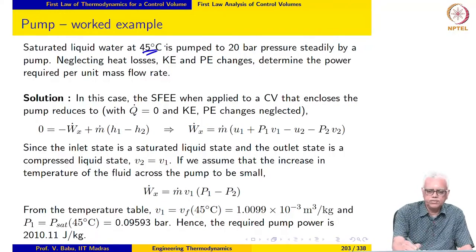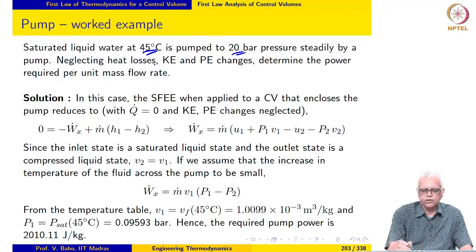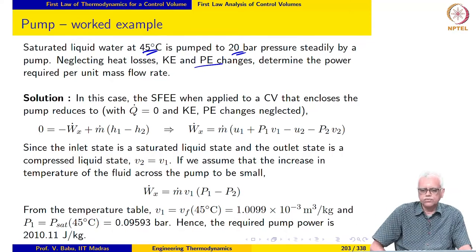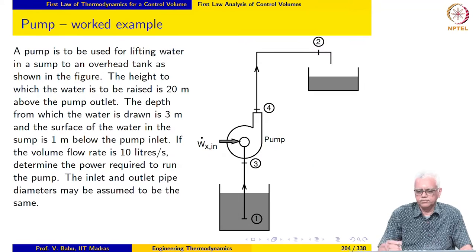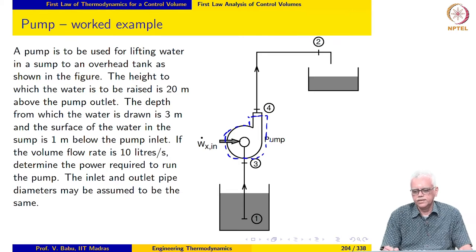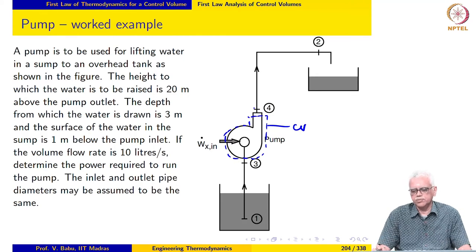Saturated liquid water at 45 degrees Celsius is pumped to 20 bar pressure steadily by a pump. We neglect heat losses, so Q-dot equals 0, and KE and PE changes are also neglected. Determine the power required per unit mass flow rate. Here is the diagram of a pump; our control volume in this case would look like this. Power is supplied, water comes in at a certain thermodynamic state, and it leaves at a higher pressure.